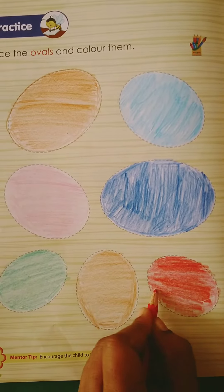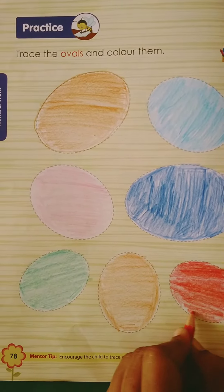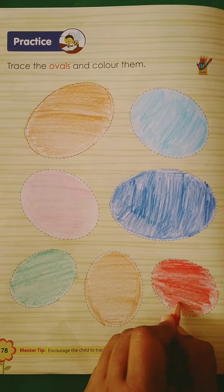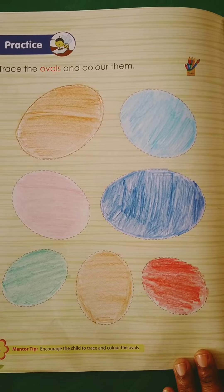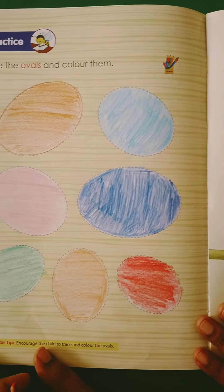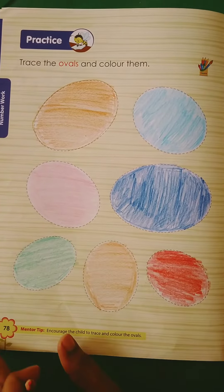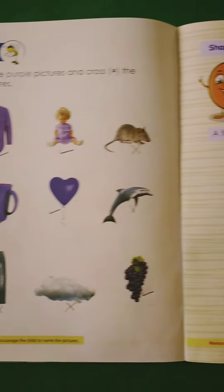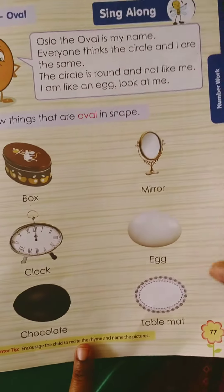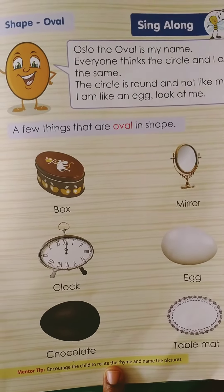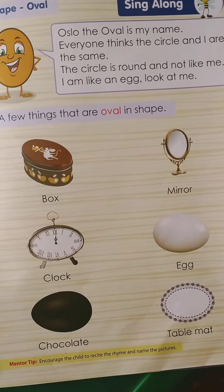So children, like this, you also do at your home — this is your homework. You have to trace and color the oval shapes and also revise the oval shape. Okay children, bye.